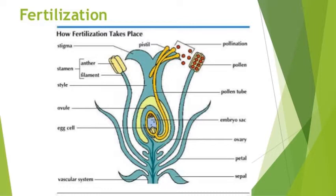When the pollen tube reaches the ovary, it will burst open and release the male gamete — the male reproductive cell. This male cell will then fuse with the female cell inside the ovary. This fusion of the male cell with the female cell takes place inside the ovary.